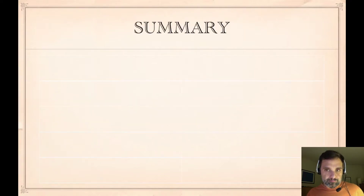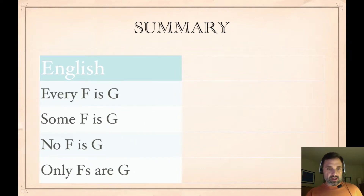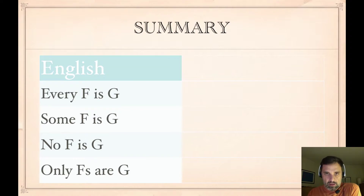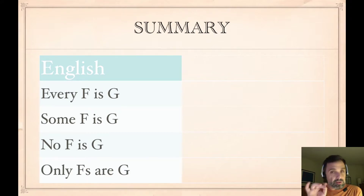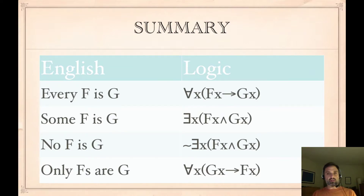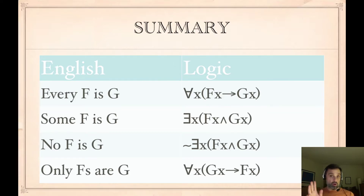To summarize what we've seen: we have 'every F is G,' 'some F is G,' 'no F is G,' and 'only F's are G.' I'd recommend you pause and write down the format for each. You need to know these as we go into more difficult problems. 'Every F is G' is: for all x, if Fx, then Gx. 'Some F is G': there's a thing such that it's F and it's G. 'No F is G': not some x, Fx and Gx. And 'only F's are G': for all x, if Gx, then Fx.